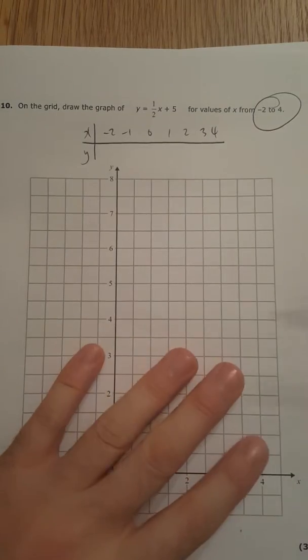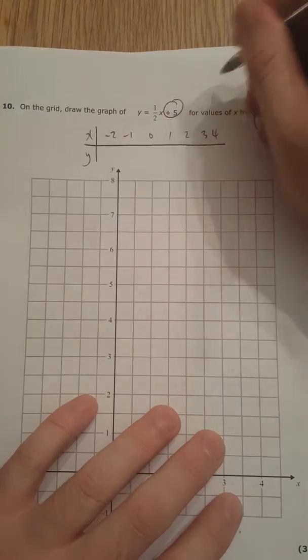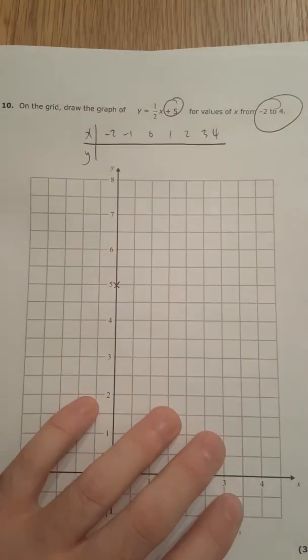But I'm going to go a bit more sophisticated using the gradient intercept. So the y-intercept is 5, so I've got a coordinate at 5.